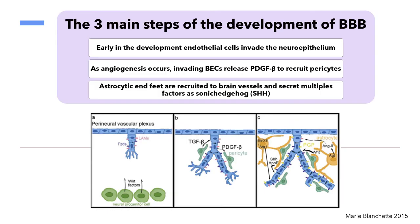In these slides we bring to you a brief resume of the main steps of the development of the BBB. Early in development, endothelial cells invade the neuroepithelium, as you can see in figure A. The second step is angiogenesis, which recruits pericytes — the green cells you can see here. Then astrocytes are recruited to brain vessels and secrete multiple factors such as Sonic hedgehog, as shown in the figure, and all these main compounds are used.